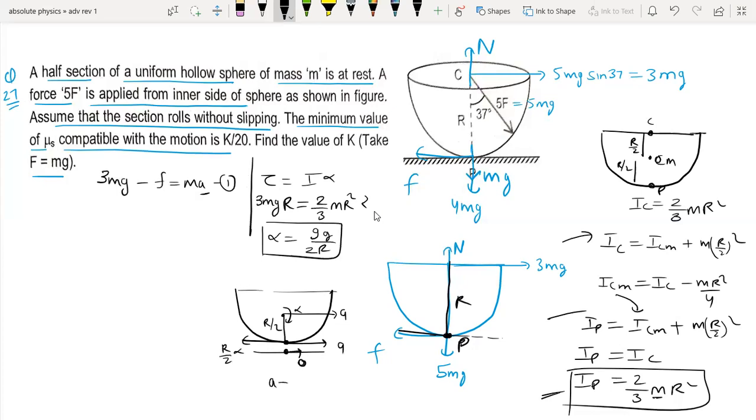A is equal to r alpha. For no slipping, these conditions are same. So a is equal to r by 2 into alpha. This is the rolling condition. 3MG minus M into r by 2 alpha is equal to friction.